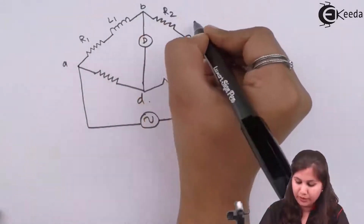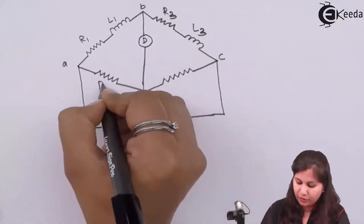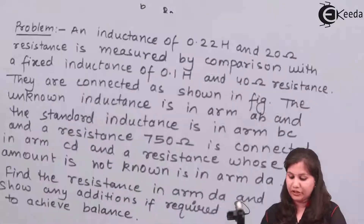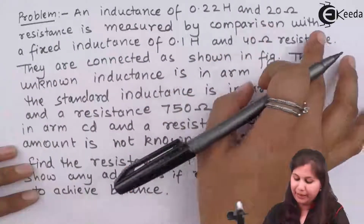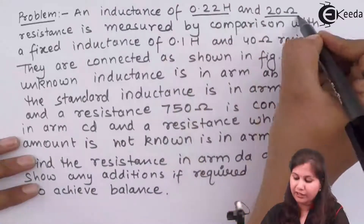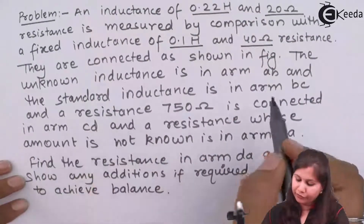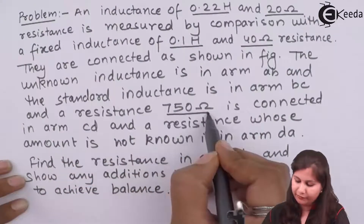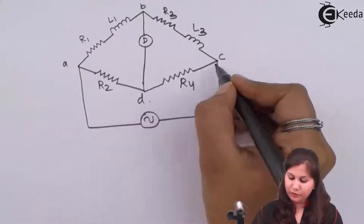The circuit elements are labeled as: R1, L1 in Arm AB; R2, L2 in Arm BC; R3, L3; R2 and R4 in the respective arms. The AC voltage source is providing the power supply to the bridge network. In the question we are given that the inductance of 0.22 Henry and 20 Ohm is measured by comparison with a fixed inductance of 0.1 Henry and 40 Ohms. So we are given the values of R1, L1 and R2, L2.